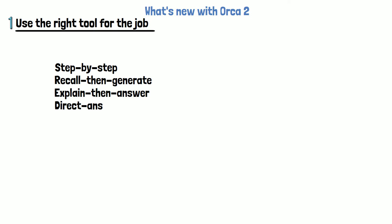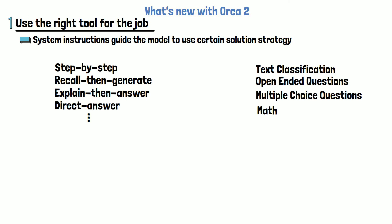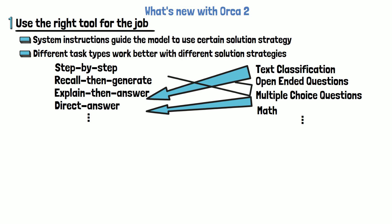So what's new with Orca 2? First is using the right tool for the job. There are various types of system instructions such as step-by-step, recall then generate, explain then answer, direct answer, and more. Each system instruction guides the model to use a specific solution strategy to reach the correct answer. There are also different types of user instructions clustered into tasks such as text classification, open-ended questions, multiple choice questions, math, and more. An important observation is that not every system instruction matches every user instruction — for a given user instruction, one system instruction may cause GPT-4 to yield an incorrect response while another causes a correct one. In Orca 2, effort is devoted to properly mapping solution strategies to user instruction types, making the responses the model trains on more accurate. The researchers assign system instructions to task types by running Orca 1 on examples and seeing which system instructions perform better for each task type.